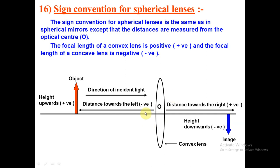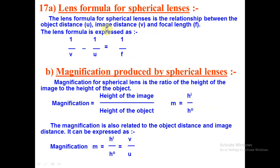This is the sign convention for lenses. Now the lens formula - it is similar to the mirror formula but with one key difference. Mirror formula: 1/f = 1/v + 1/u. Lens formula: 1/f = 1/v − 1/u. Be very careful about this sign difference.